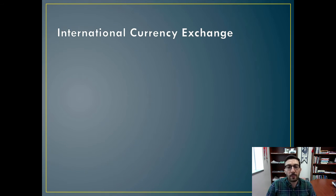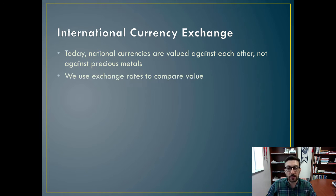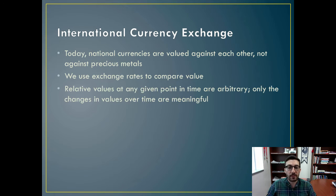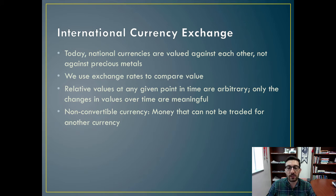Now we're going to talk about international currency exchange. Today, national currencies are valued against each other, not against precious metals. We use exchange rates to compare the value of these different currencies. Relative values at any given point in time are arbitrary; only the changes in values over time are meaningful. There are a couple of different kinds of currency: non-convertible currency, which is money that cannot be traded for another currency, and hard currency, which is money that can be readily converted to leading world currencies.